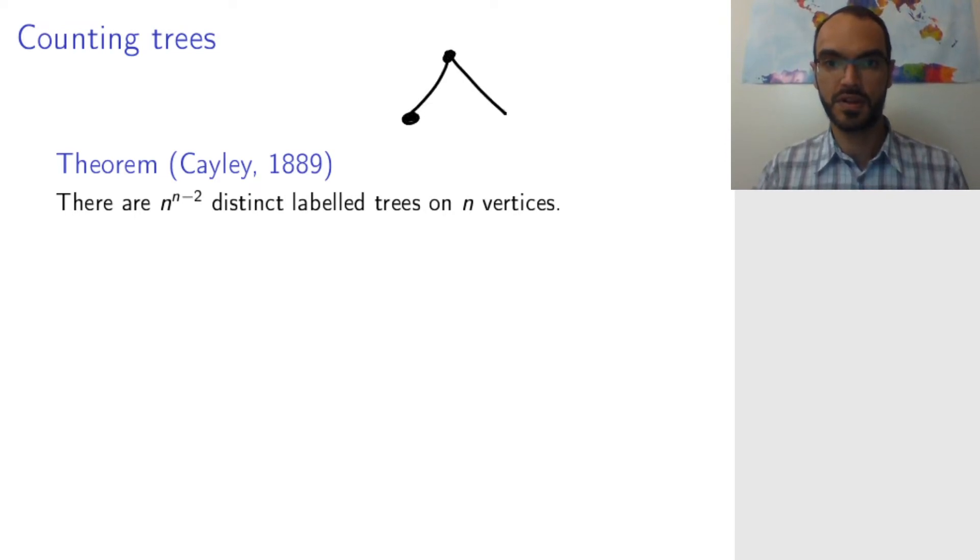We're looking at counting the number of trees where we make a difference between the vertices by labeling them. What Cayley's theorem tells us is that there are n to the power n minus 2 different labeled trees on n vertices.